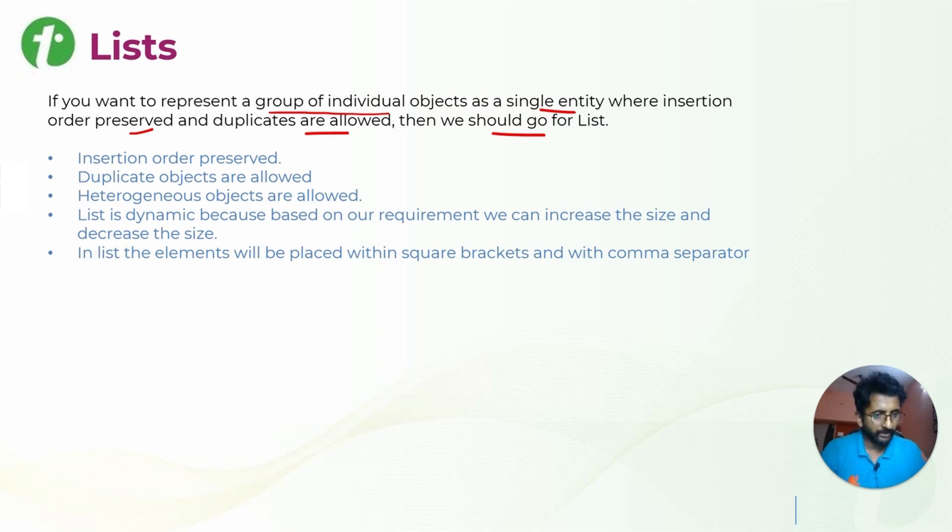So what is this insertion order and duplicates? For example, I can list something - this is the name of the list, like an identifier. It should start with opening brackets. It can have one, two, three, four - these are digits. Instead of that, you can also have...